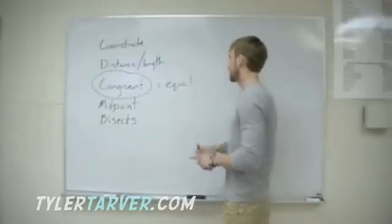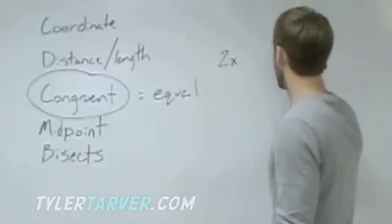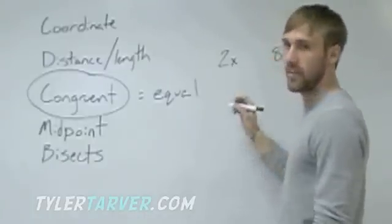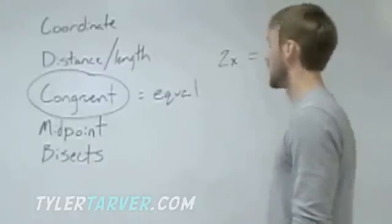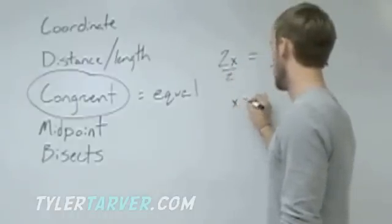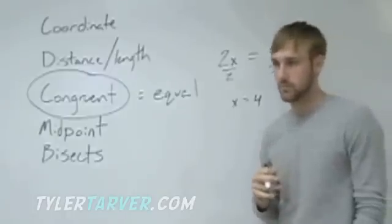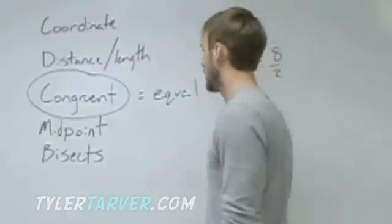So, if we say that 2x is congruent to 8. If we wanted to find x, all we have to do is put an equal sign in there. And then we'd solve it. That's it. So, if they say two things are congruent, you can just set them equal to each other.